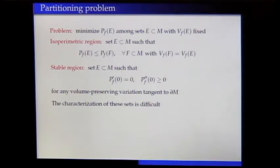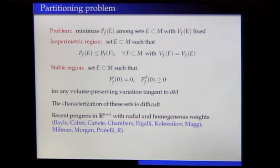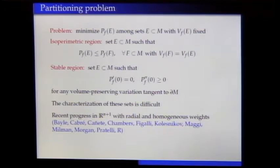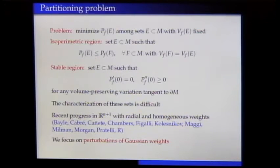The complete characterization of isoperimetric and stable sets is, for arbitrary weighted manifolds, a very difficult task. So it is natural to study first densities in simple spaces like Euclidean space or space forms having a special form or a nice behavior with respect to a certain subgroup of isometries or diffeomorphisms of the ambient space. In recent years, several authors have paid much attention to this problem for radial and homogeneous weights in Euclidean space with many important contributions.